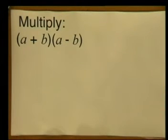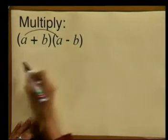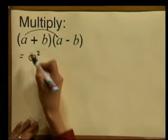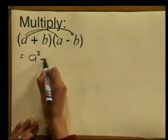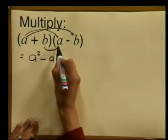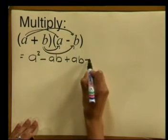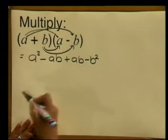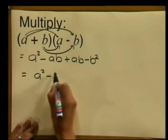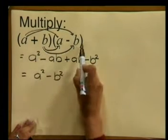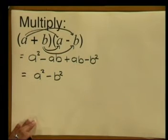In order for you to understand how to solve the difference of two squares, look at the following process: how do you multiply a plus b by a minus b? Well, a multiplied by a gives us a squared, and a multiplied by minus b gives us minus ab. And b multiplied by minus b gives us minus b squared. So if you add your like terms you will get a squared minus b squared. So multiplying a plus b by a minus b, we get a squared minus b squared. We are back where we started — we have a difference of two squares, and we got there through the process of multiplication.